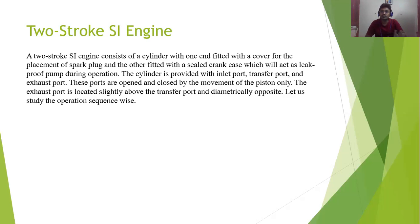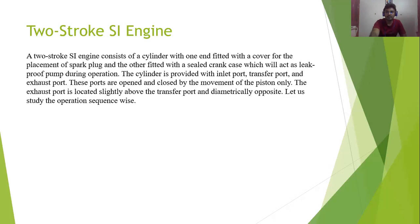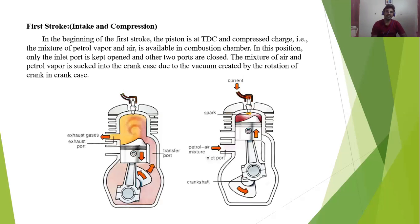In the four-stroke SI engine, for each and every stroke the crankshaft completes one full rotation. First rotation is intake, second rotation is compression, third is expansion or combustion, and fourth is exhaust. Now looking at the two-stroke engine diagram: in the first stroke, at the left side diagram you can see the exhaust port, and just below the exhaust port there is the inlet port on the right side.